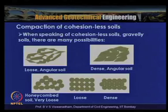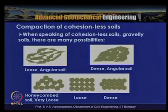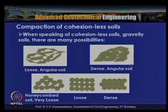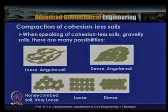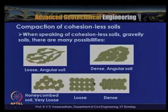There are two predominant soil types: cohesionless soils and cohesive soils. For cohesionless soils (gravelly or sandy soils), there are different types of particle arrangements or soil fabric. A loose angular soil can be compacted into a dense angular arrangement. Under moist conditions, sandy soils may exhibit a honeycombed structure, which upon adequate densification can be transformed into a denser soil fabric.